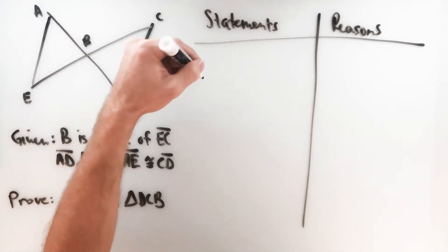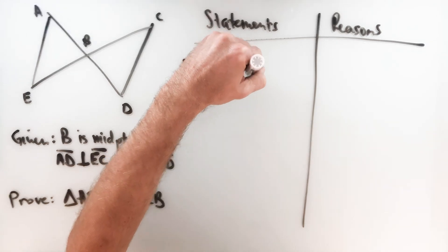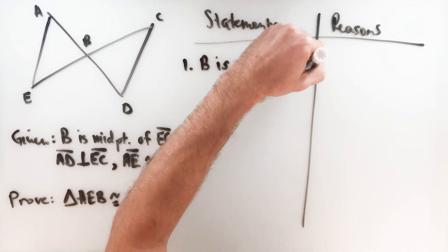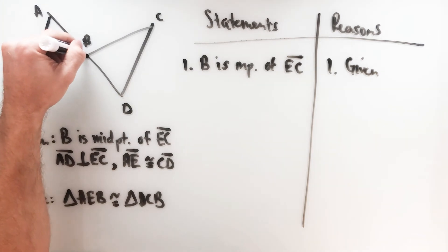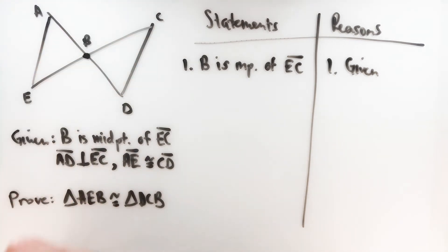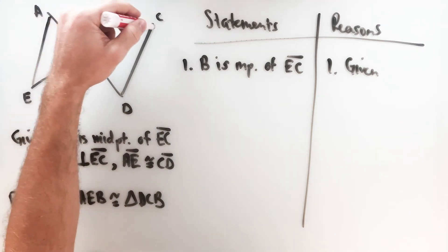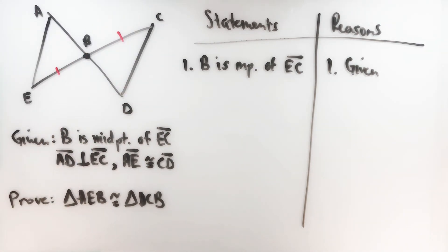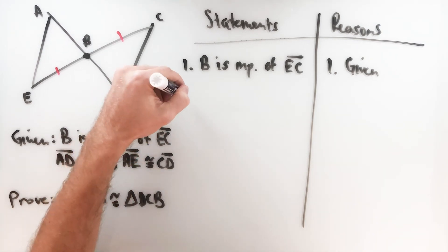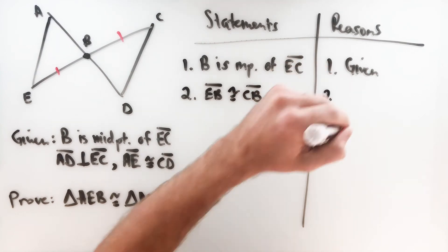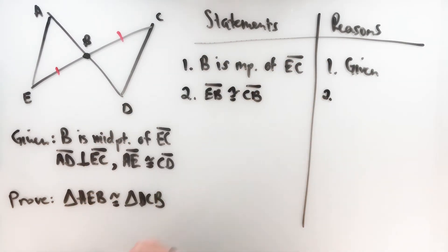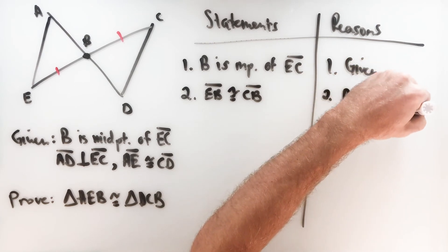Let's get started with what we know: B is the midpoint of segment EC — given. What does that tell us? B is the middle point halfway between point E and point C, so the distance from E to B and from C to B must be the same. Therefore EB is congruent to CB — by the definition of a midpoint.